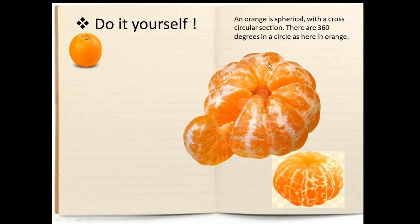Similarly, an orange also has 360 degrees in it as it is spherical in shape. Now children, take this slice of orange. Is the distance between this line and this line in between these — is the distance same everywhere? No. The distance on the tip is less. When it gradually comes to the midsection, it is more — it is the highest. Simultaneously, when it goes to the bottom area, again the distance between the two lines at the bottom is less.